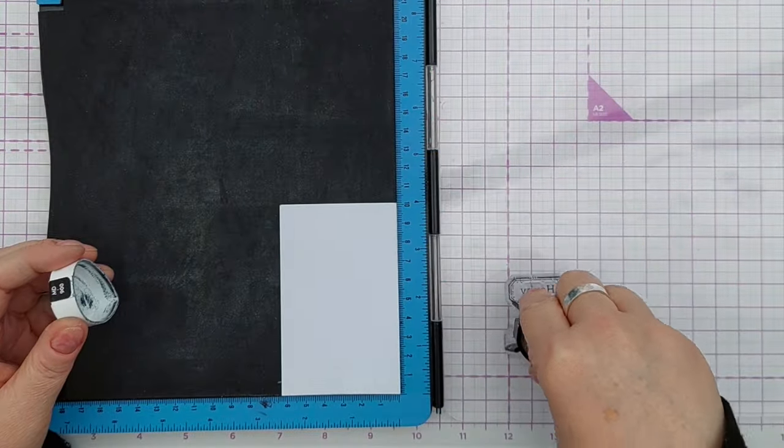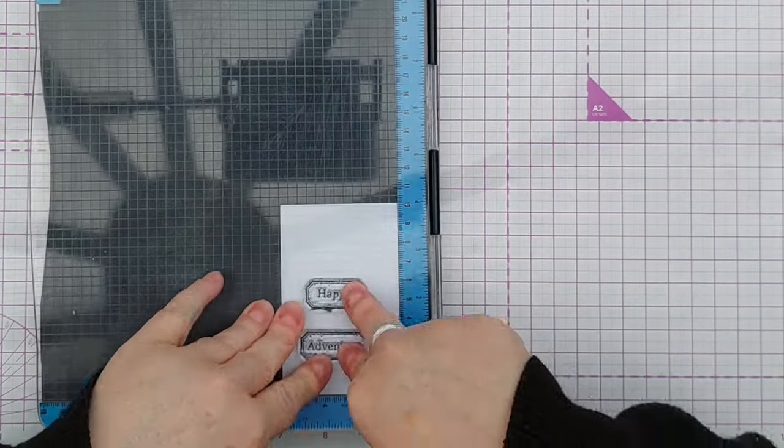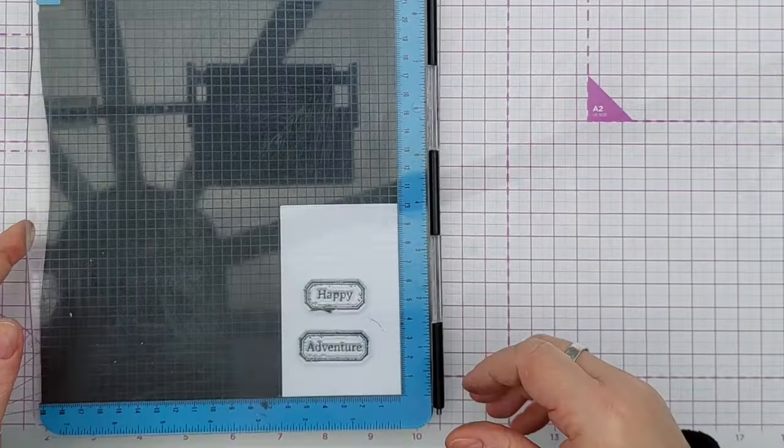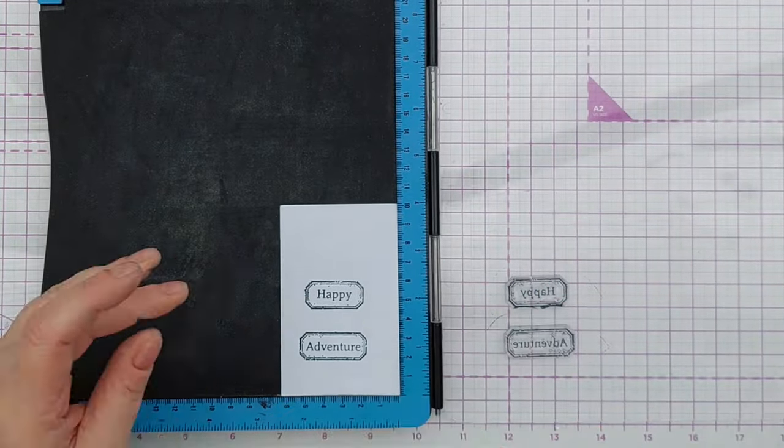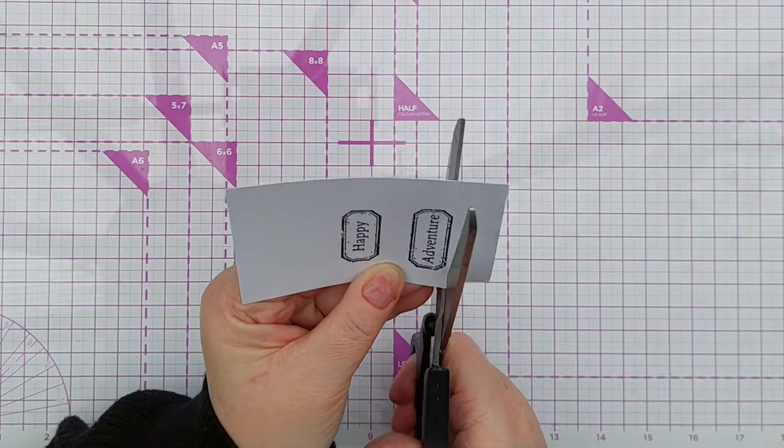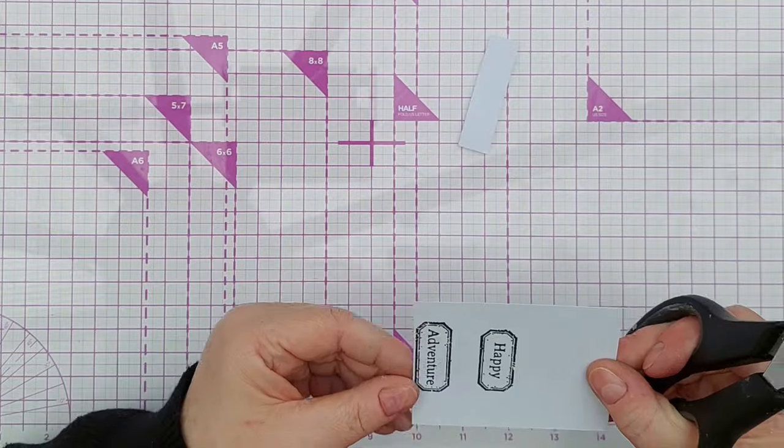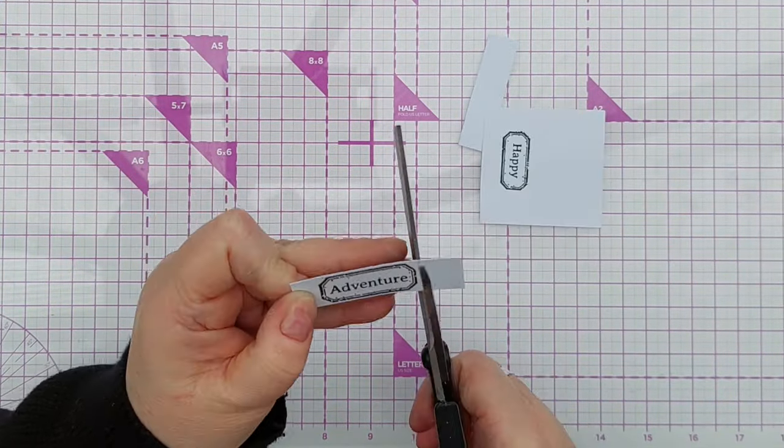For my sentiment I've got some grungy label type stamps that have the words happy and adventure in them. I stamped those in black ink to make them stand out against the colorful arrows and then I used a pair of scissors to cut them out. They have a tiny little white border around the outside of each label.